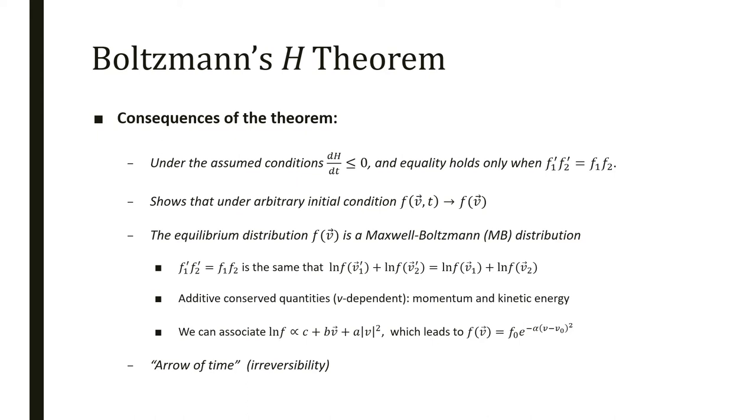We can also see that using the expression for equality, if we apply the logarithm to both sides, we have some additive functions of velocity. We can compare this with the conserved quantities of the system: conserved momentum and conserved kinetic energy. We can associate log f as a function related linearly to velocity or quadratic velocity related to momentum and kinetic energy. Manipulating this, we find the Maxwell distribution. So Boltzmann proves that Maxwell distribution is the equilibrium distribution and that an arbitrary condition will tend to it asymptotically.